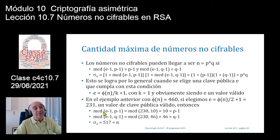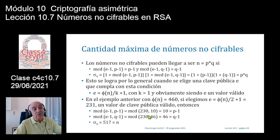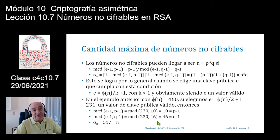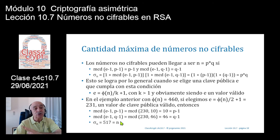Con la clave pública E=231 en vez del 7 que elegimos antes, haría que el valor completo del módulo N=517 fuera en claro: cualquier número en el módulo, el 0, 1, 2, 3, 4, ..., 514, 515, 516, todos irían en claro. Eso de alguna forma nos podría preocupar.